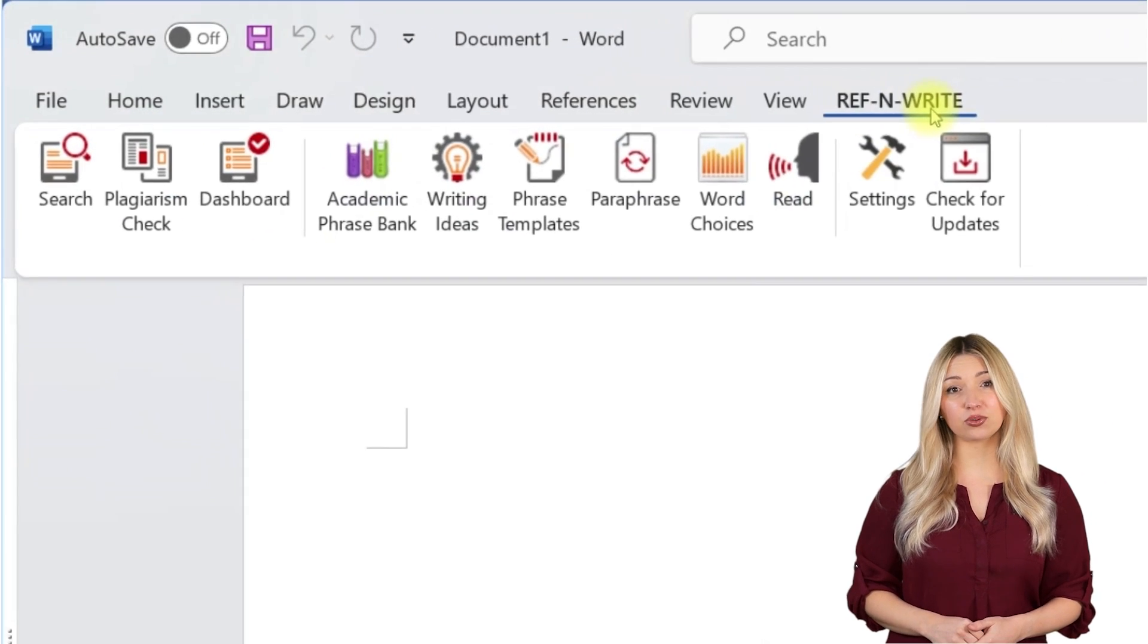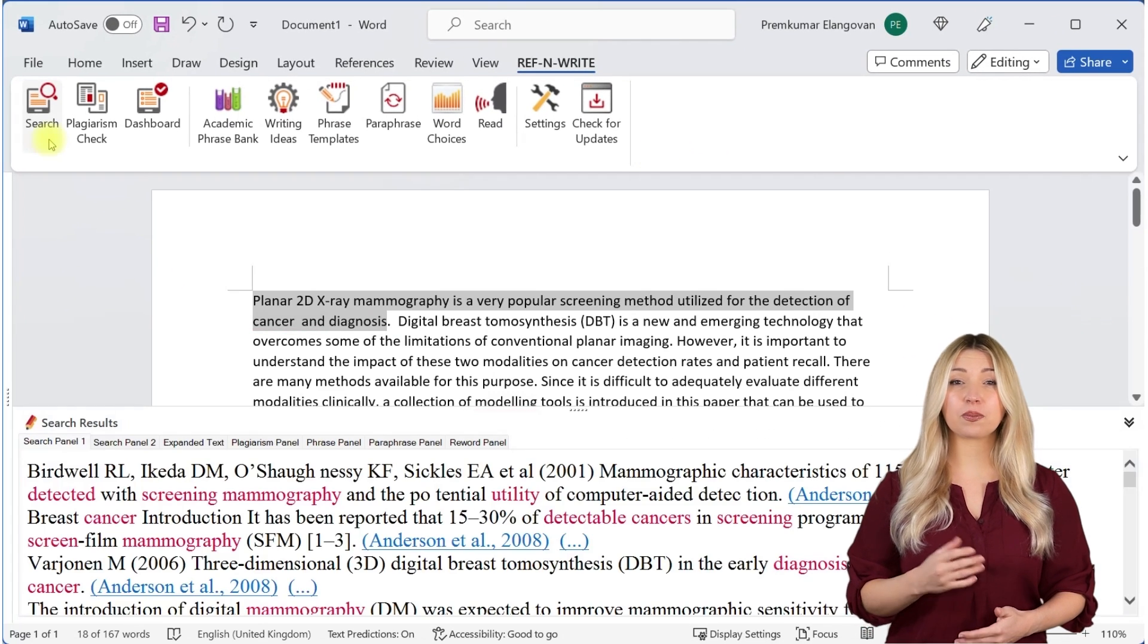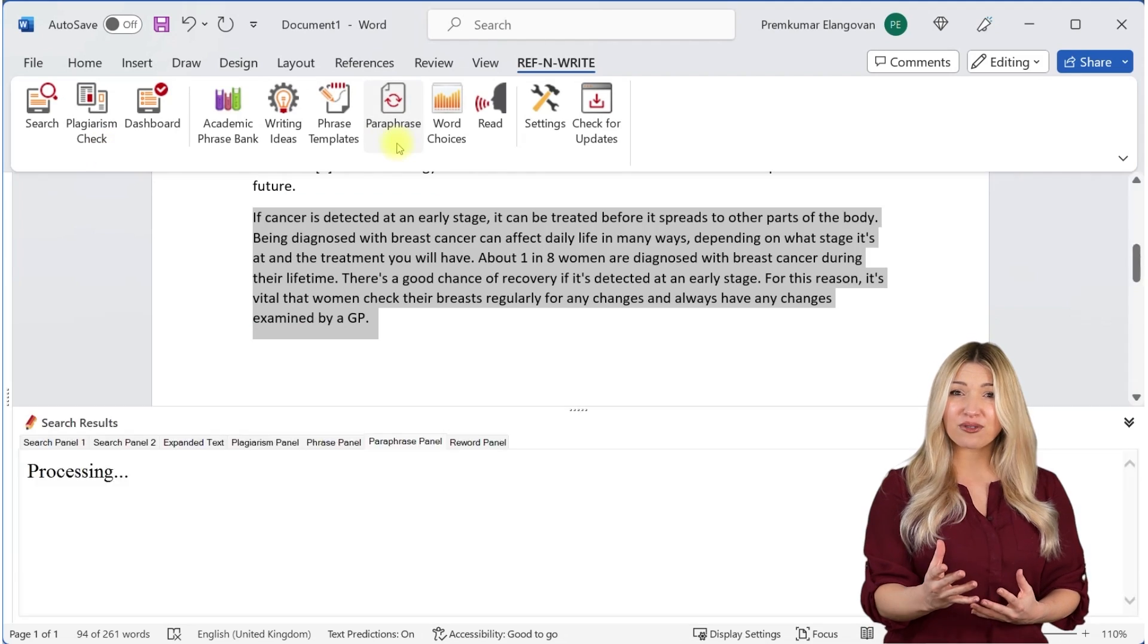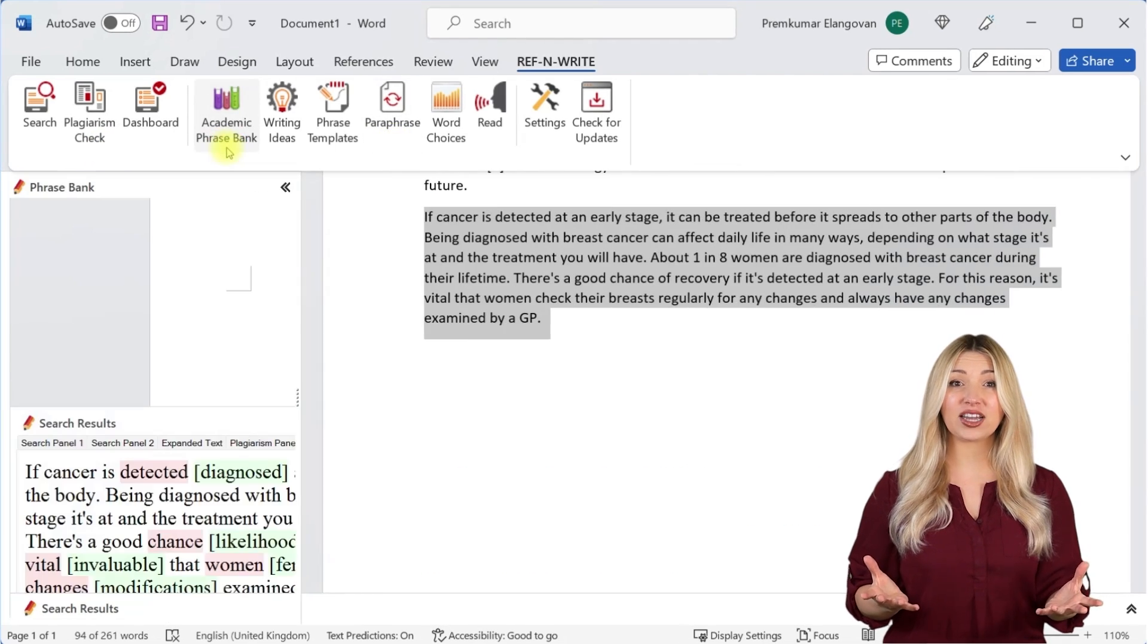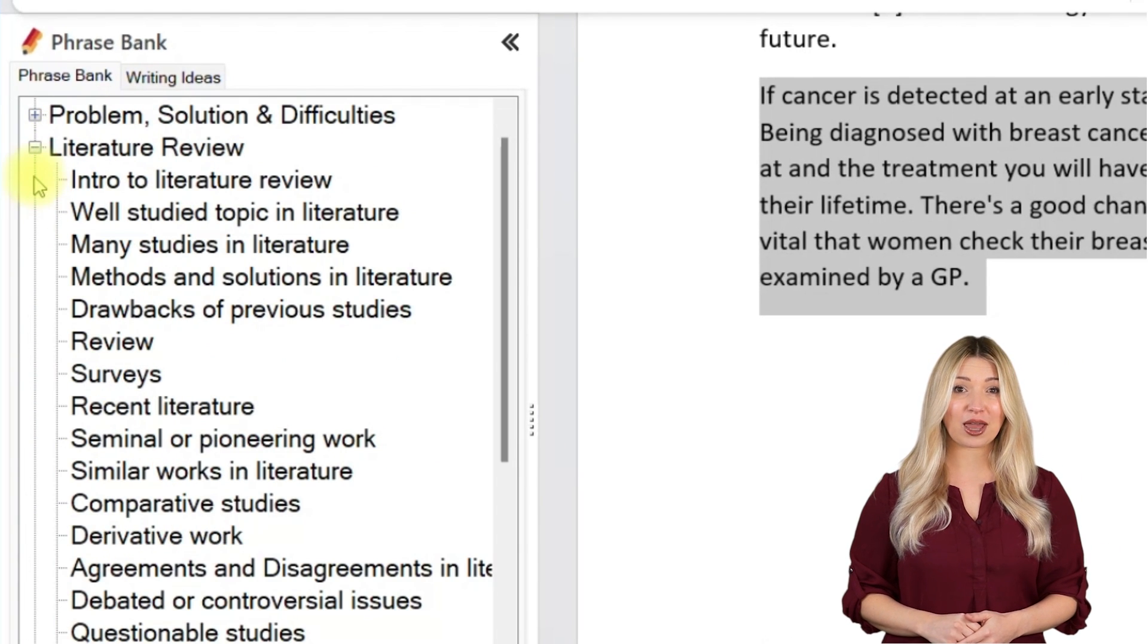If you still haven't installed RefnWrite software, please do it. It comes with referencing tools, plagiarism checkers, proofreading tools, paraphrasing tools, an academic phrase bank, and many other useful features to help you write your research papers and thesis.